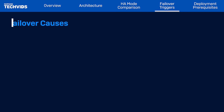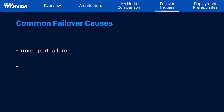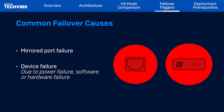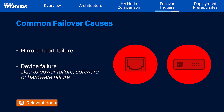I'll now briefly discuss the events that can trigger failover. These include, but are not limited to, network port failure and device failure, which could be the result of power or power supply failure, or hardware or software failure. Refer to the linked documentation for more information about the events that can trigger a failover condition.